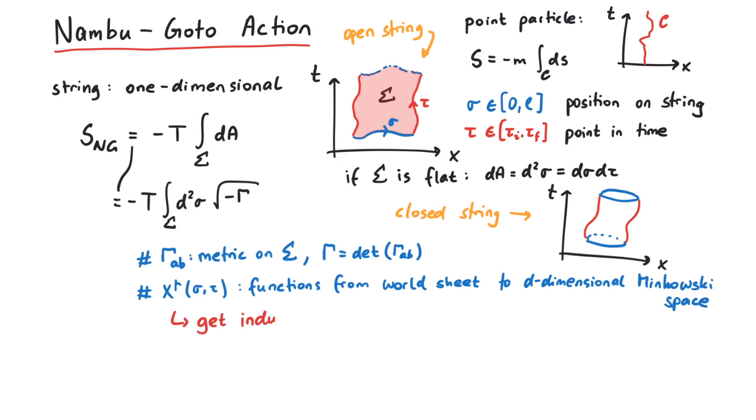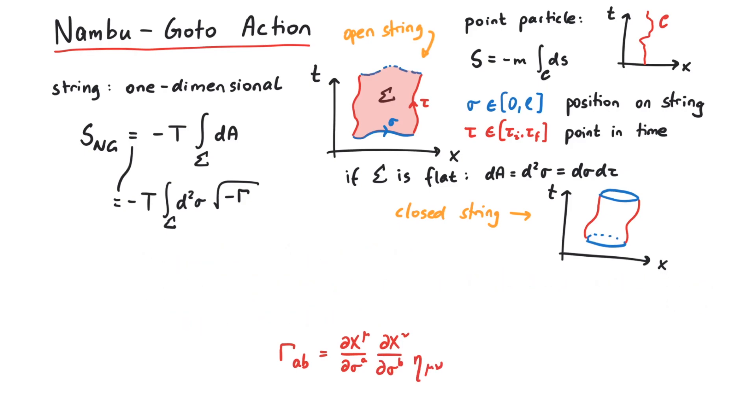The induced metric on the world sheet that we inherit from the Minkowski metric is defined as the partial derivatives of x with respect to the world sheet coordinates times the Minkowski metric. So the action is given by minus T times the integral over d2 sigma over the square root of minus the determinant of the induced metric.